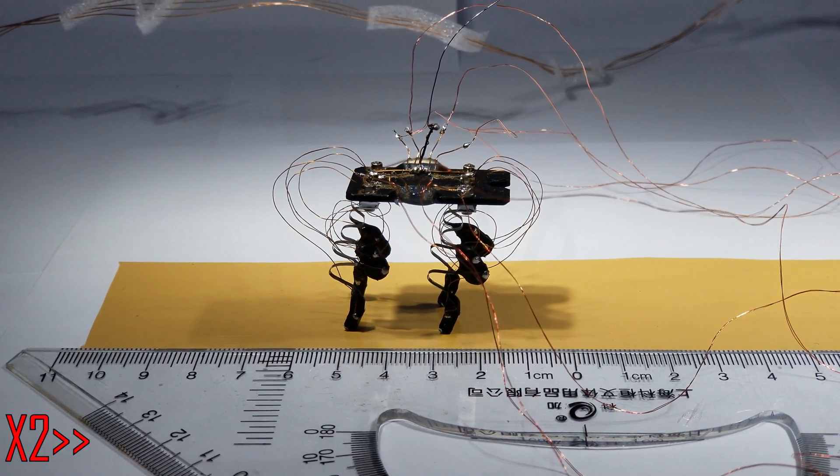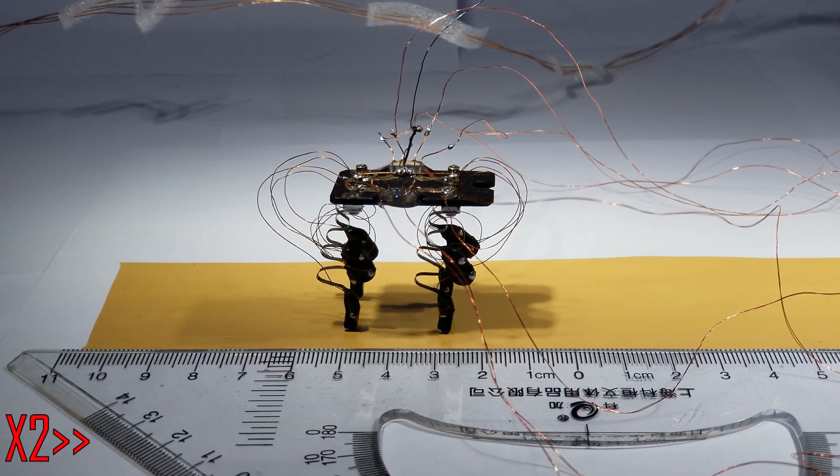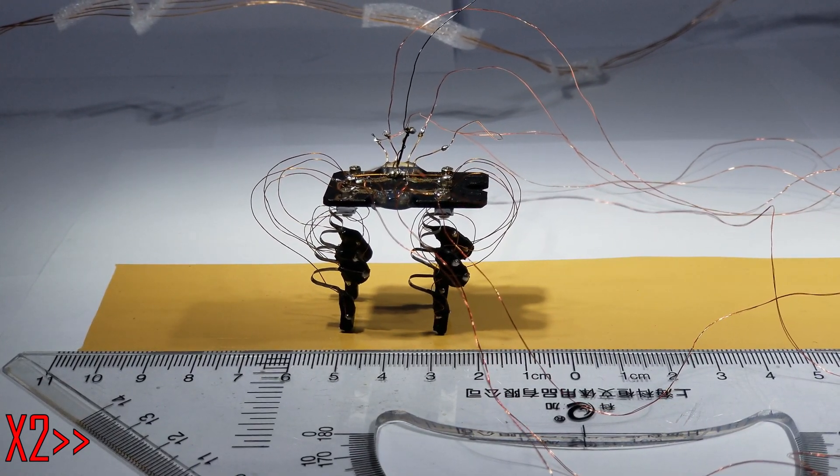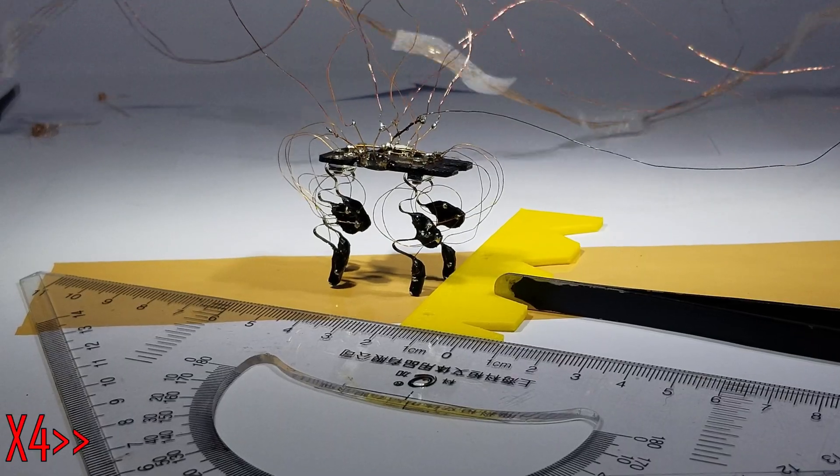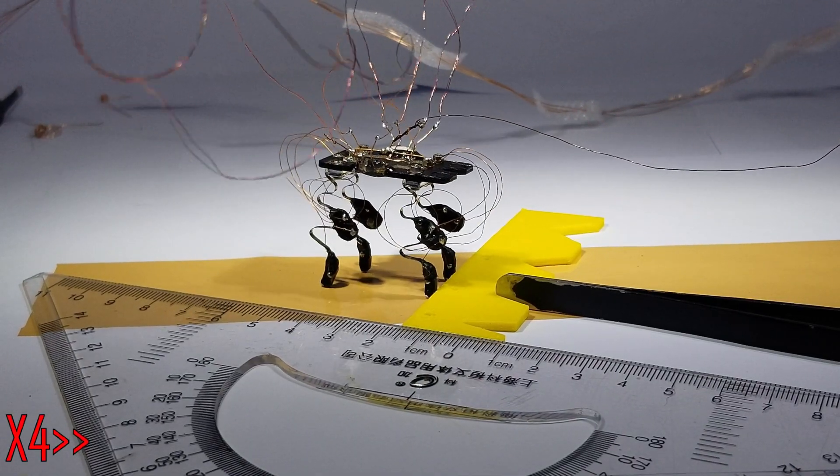So I will start the demo by showing a basic mode that has been tested before. It can lean backward, as we see here, and then attempt to go above a very basic obstacle.